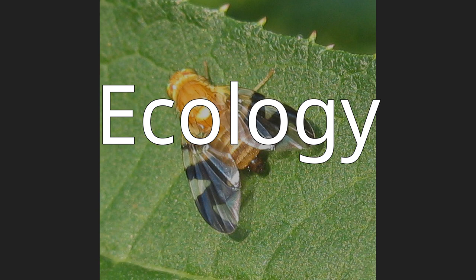Adult Tephritid fruit flies are often found on the host plant and feeding on pollen, nectar, rotting plant debris, or honeydew. Natural enemies include parasitoid wasps of the genera Diapriidae and Braconidae.